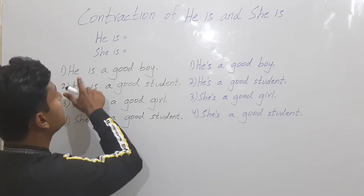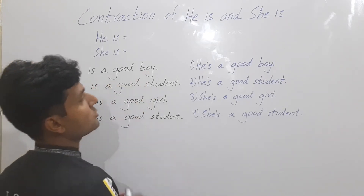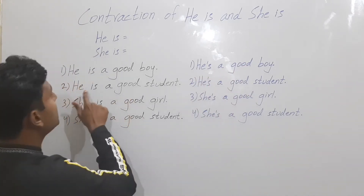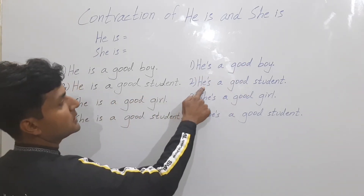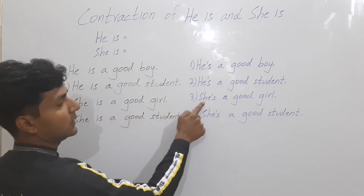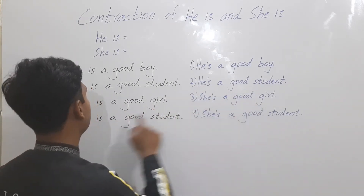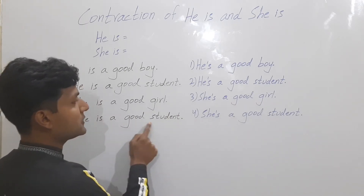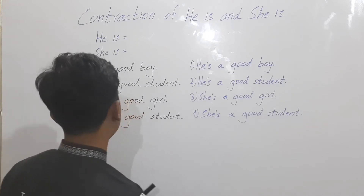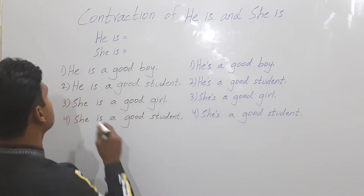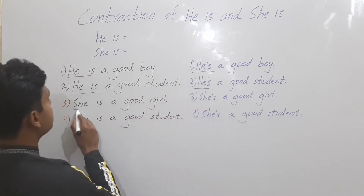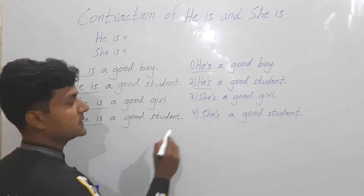Let's start. 'He is a good boy' becomes 'He's a good boy.' 'He is a good student' becomes 'He's a good student.' 'She is a good girl' becomes 'She's a good girl.' 'She is a good student' becomes 'She's a good student.' So we change 'he is' into 'he's' and 'she is' into 'she's'.